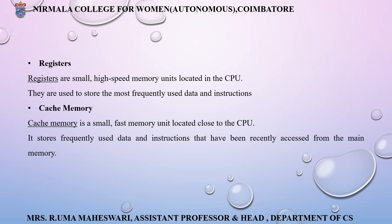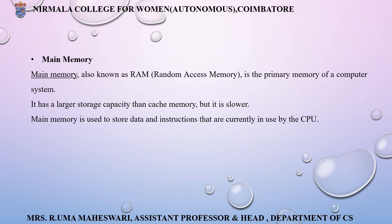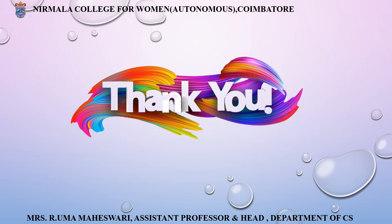Registers are small, high-speed memory units located in the CPU, whereas cache memory is a small and fast memory unit located close to the CPU. Main memory is also known as RAM; it is the primary memory of the computer system and has a larger storage capacity than cache memory, even though it is slower. Main memory is used to store data and instructions that are currently being used by the computer.